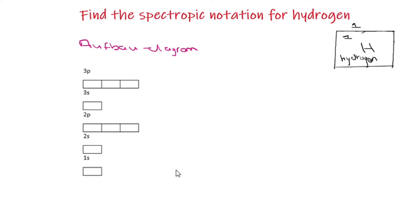Since we said atomic number of hydrogen is 1, we can write down on the Aufbau diagram that 1 electron. Therefore, the electron configuration or the spectroscopic notation can be written as 1s to the power of 1.